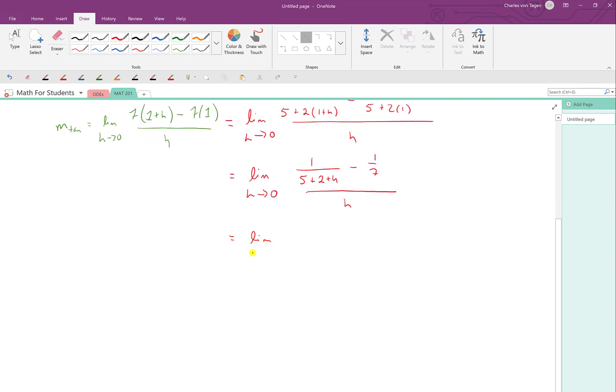So this gives us the limit as h approaches 0 of 1 over 5 plus 2 plus h minus 1 over 7 all over h. And then here's my trick. I want to clear out these fractions here. So let's multiply this expression by 7 times 5 plus 2 plus h all over 7 times 5 plus 2 plus h. Why did I choose this? Well, I want to clear out these two fractions, and the LCD, the least common denominator across these two fractions, is this expression here.